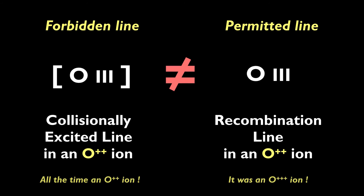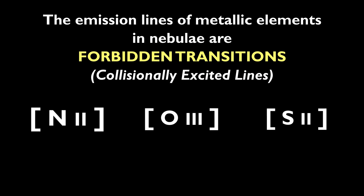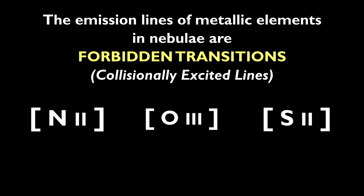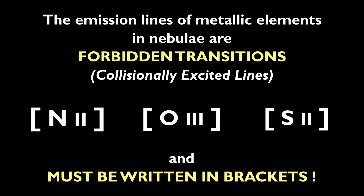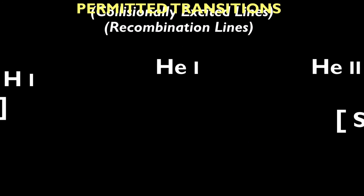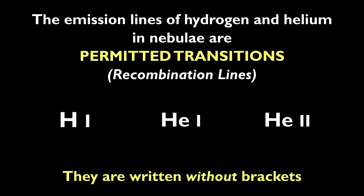The emission lines of metallic elements in nebulae are collisionally excited lines — forbidden transitions. They must be written with brackets, like the very famous [O III] and [S II] emission lines we observe in nebulae and galaxies. However, the emission lines of hydrogen and helium in nebulae are recombination lines — that is, permitted transitions — and they are written as usual, without brackets.